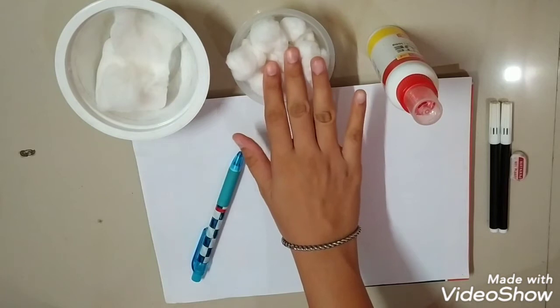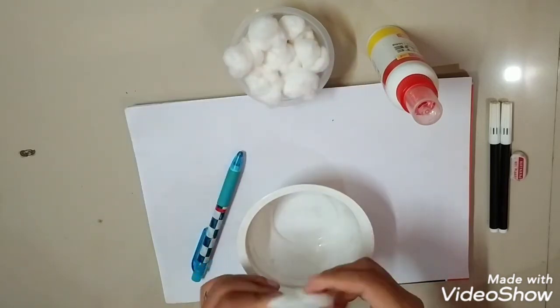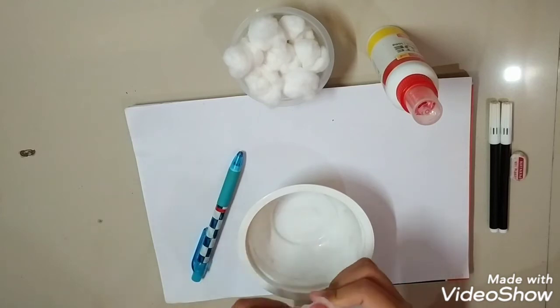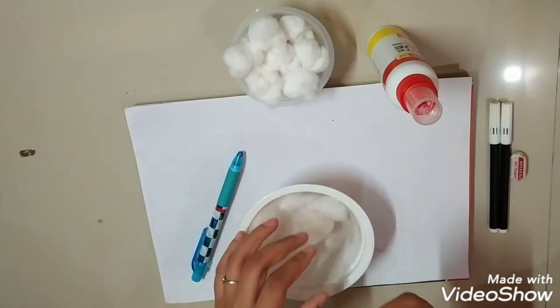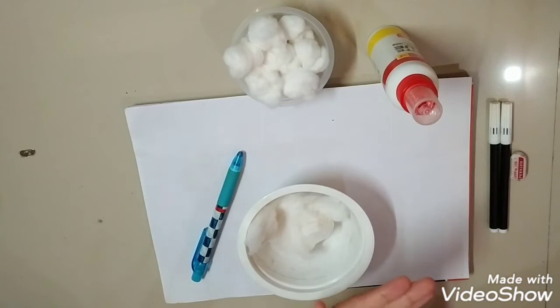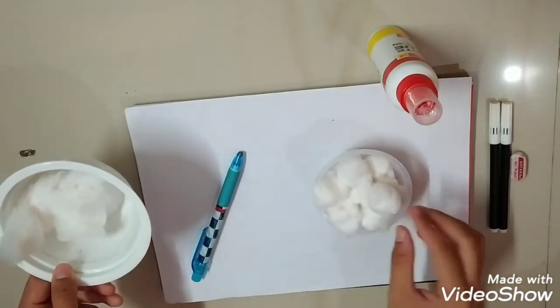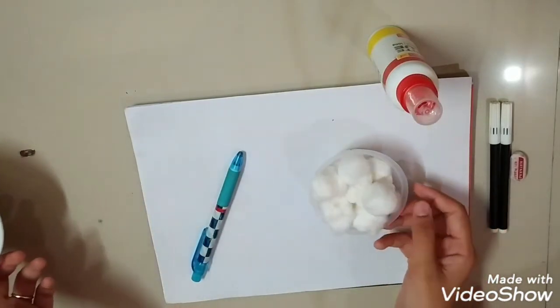For making cotton balls, I will teach you how to do it. Take cotton, take your parents' help and tell your parents to give you cotton. Take cotton, keep it in your hand, this way. See, it is a cotton ball. So I have made these cotton balls. So let's start.